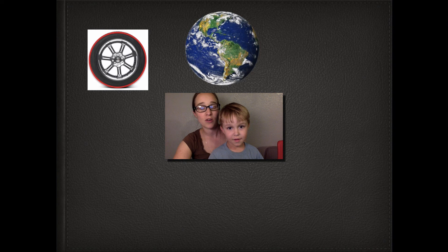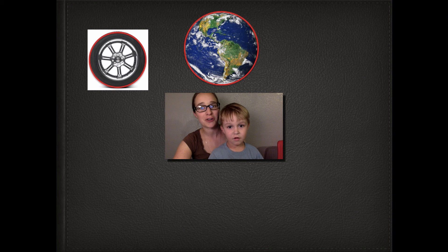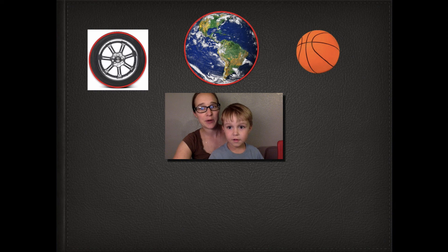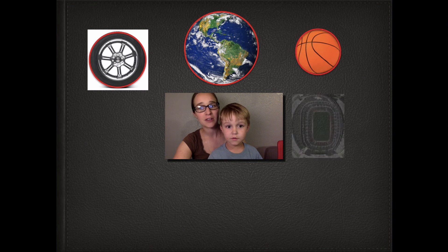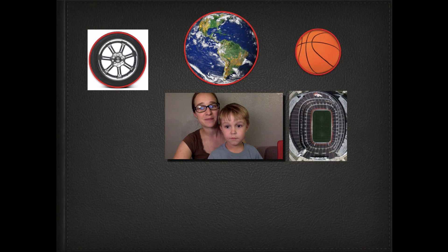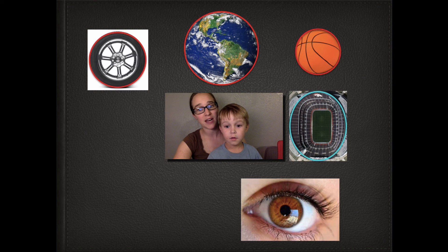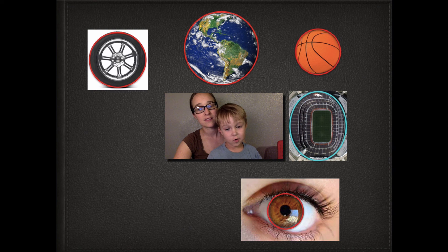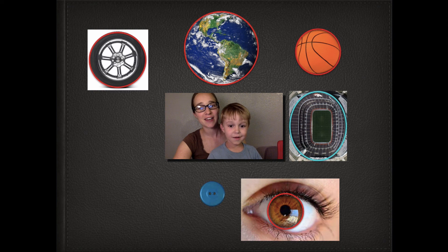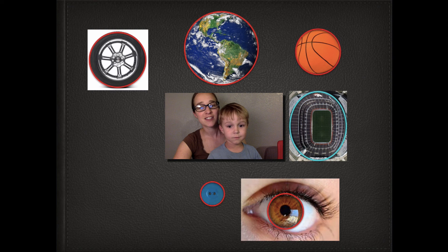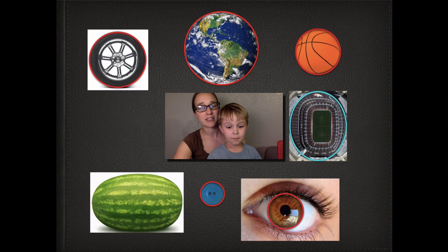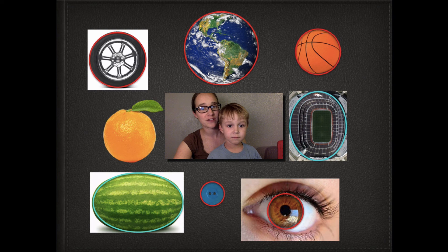How about the world? Circle. And how about this basketball? Circle. How about the Broncos stadium? Oval. And how about the brown part of the eye? Circle. And a button? Circle. How about this watermelon? Oval. And how about an orange? Circle. It's a circle. Good.